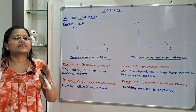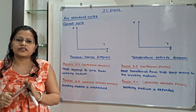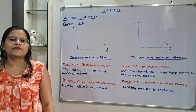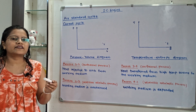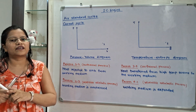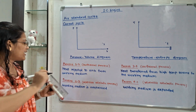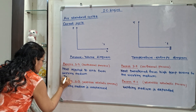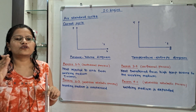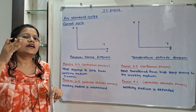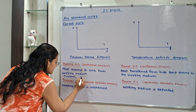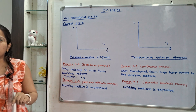Before drawing the diagrams, let us understand what happens during heat rejection to the sink from the air. This is an isothermal process, meaning temperature will remain constant. During the heat rejection process, entropy will always decrease, so entropy S is getting decreased — we show an arrow in the downward direction.